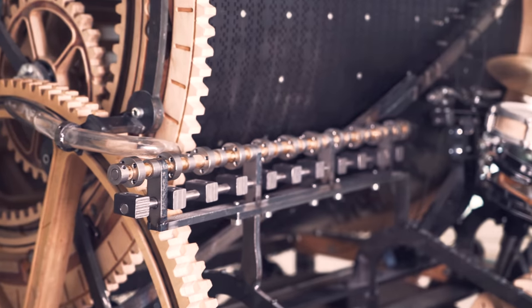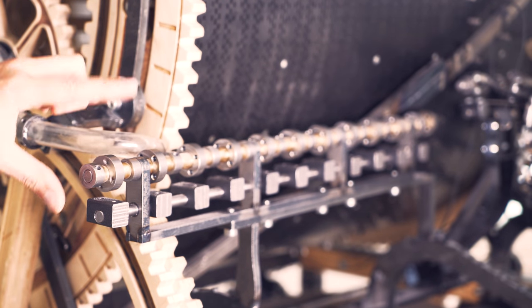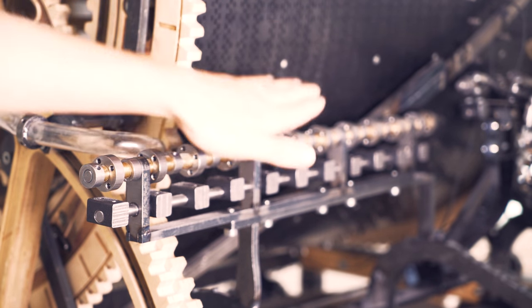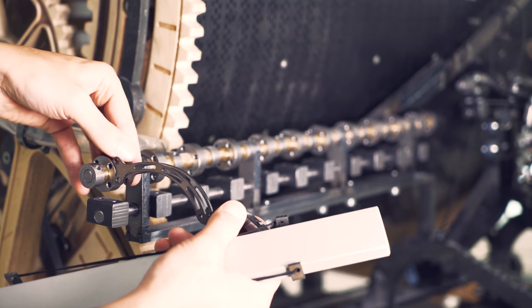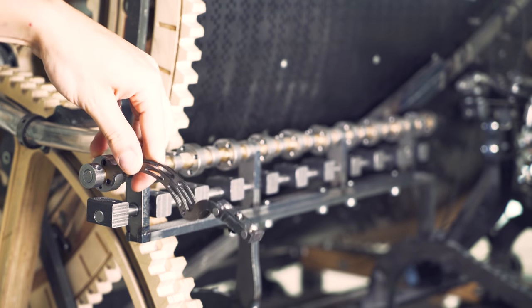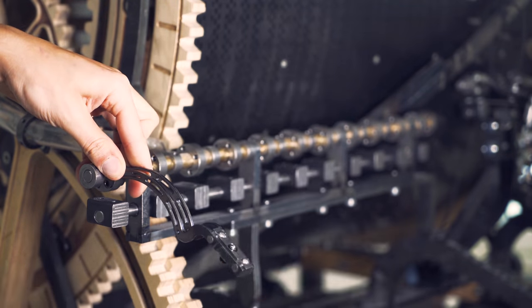A couple episodes ago you saw me building this long rail with these moving pivot points. This is the support rail for the vibraphone. And in this episode we're going to test our design for the vibraphone arms that will hold the vibraphone plates.